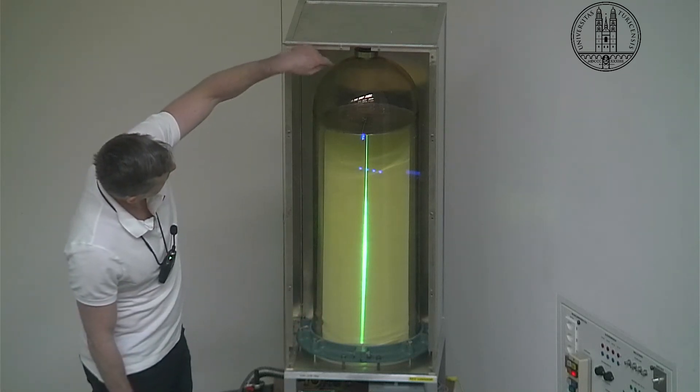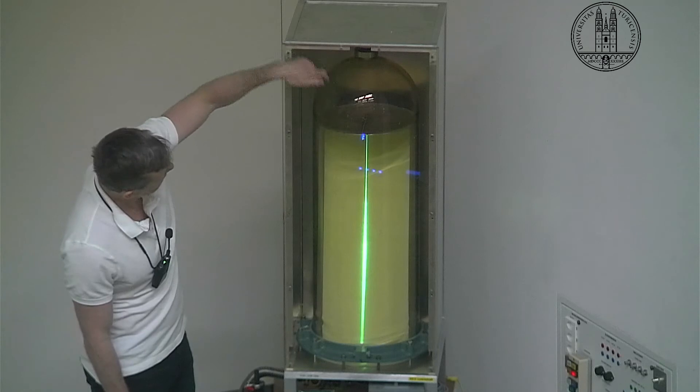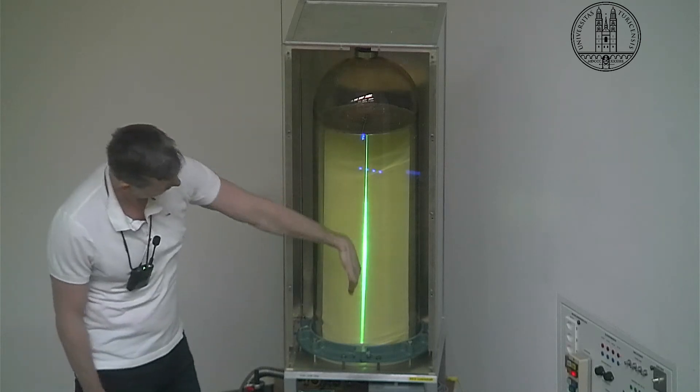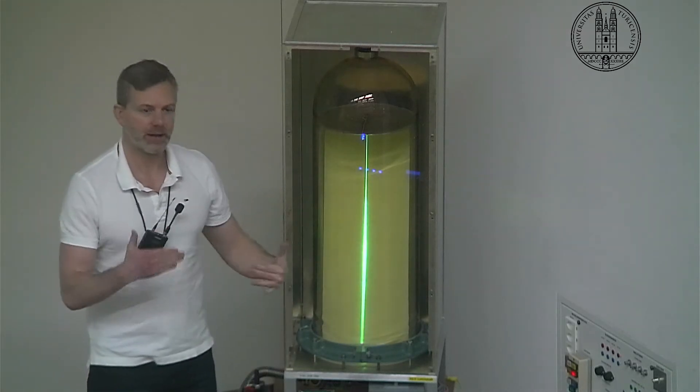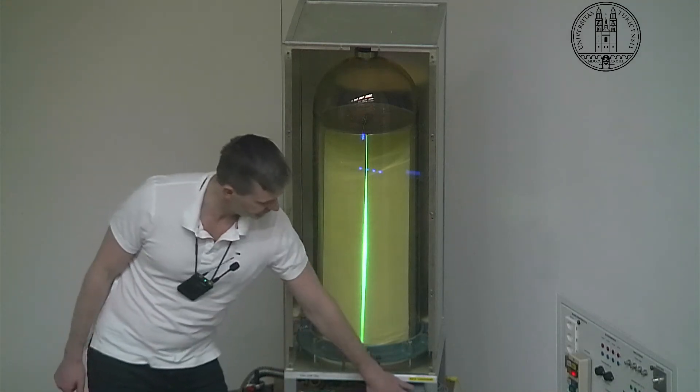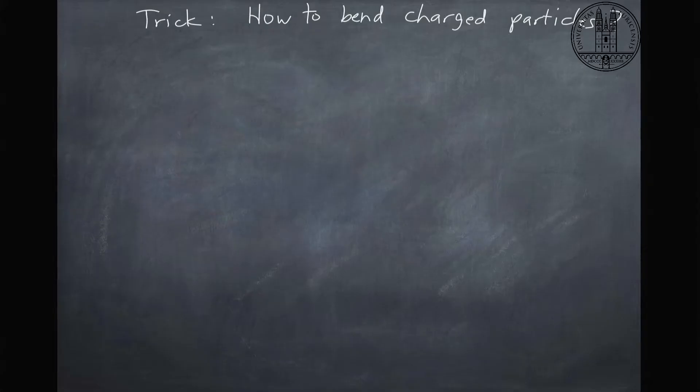They're accelerated in the top here through a voltage difference, so they're all moving downward. Let's see if we can figure out a way to bend these particles. How do we bend these charged particles?